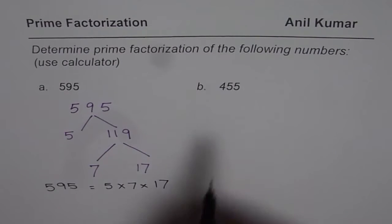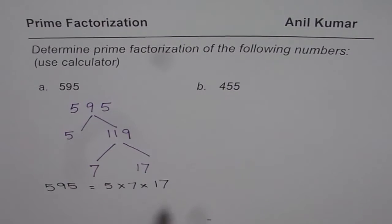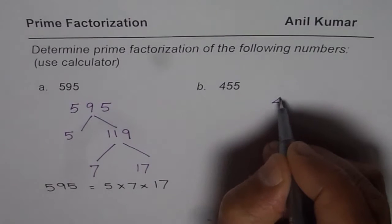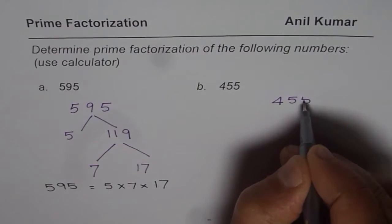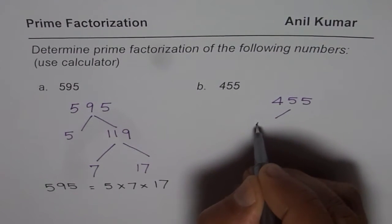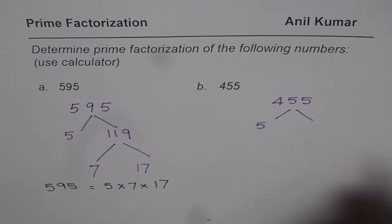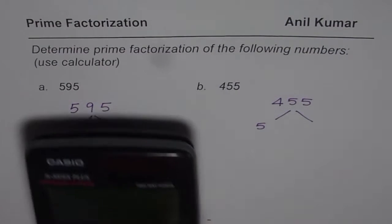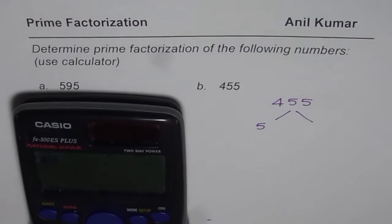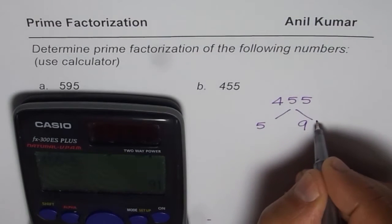Now 455. You need to work with 455 now. We will begin in the same fashion. 455 can be divided by 5, right? So we know 5 is one of the prime factors. The other one, we can use the calculator. 455 divided by 5 equals 91.